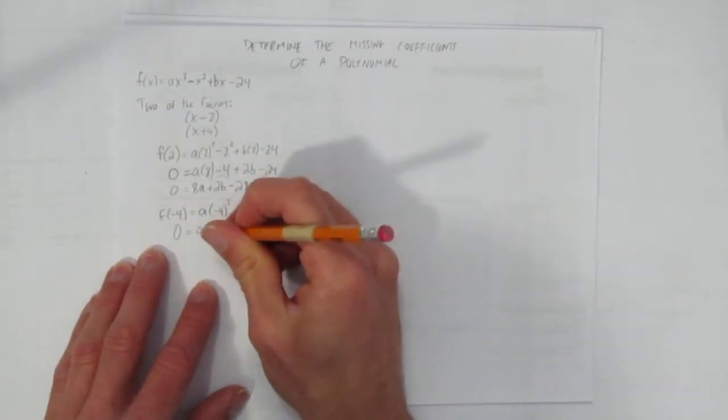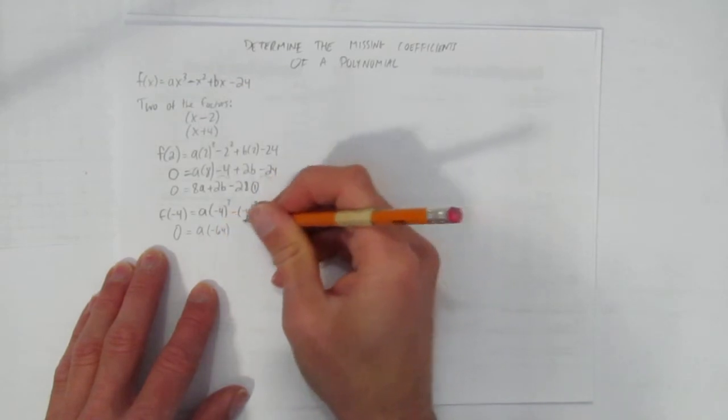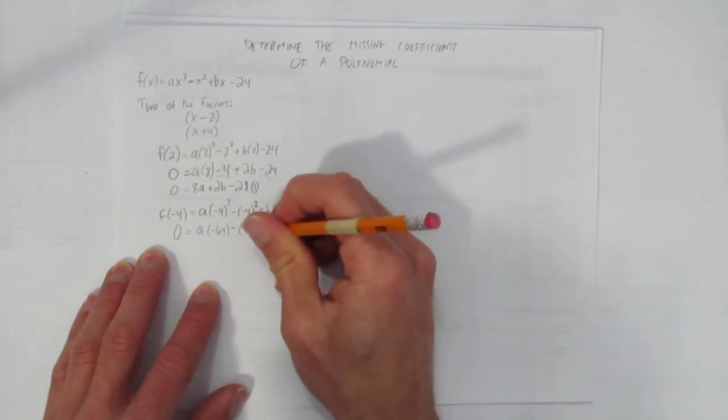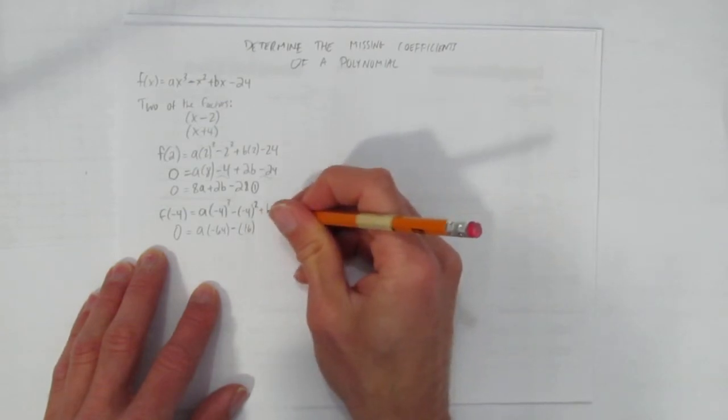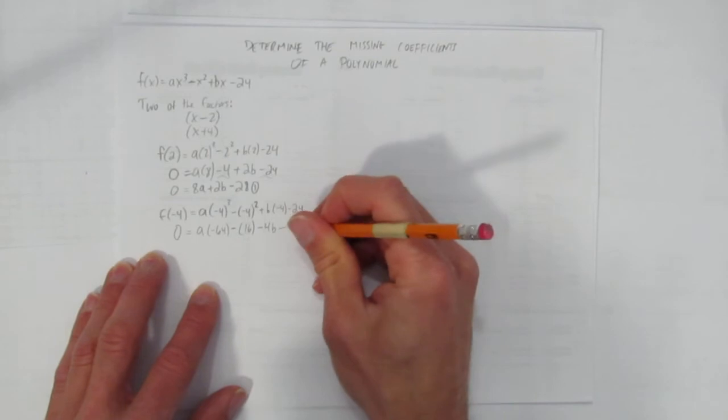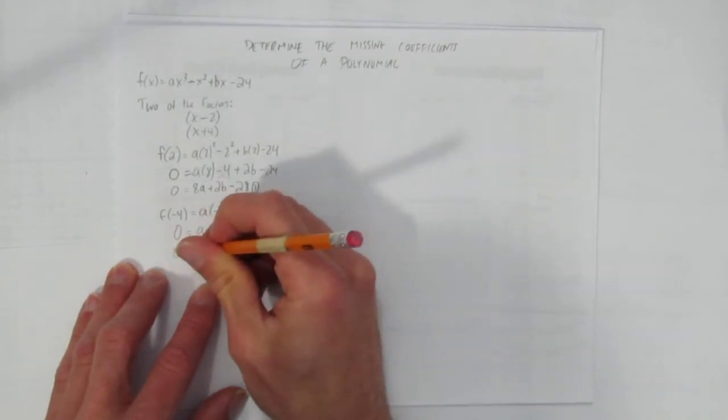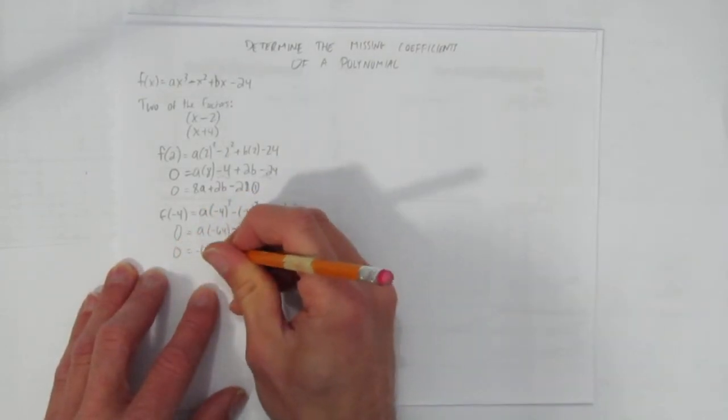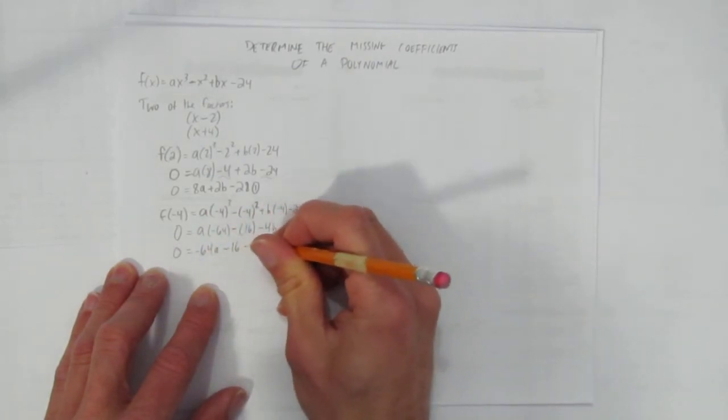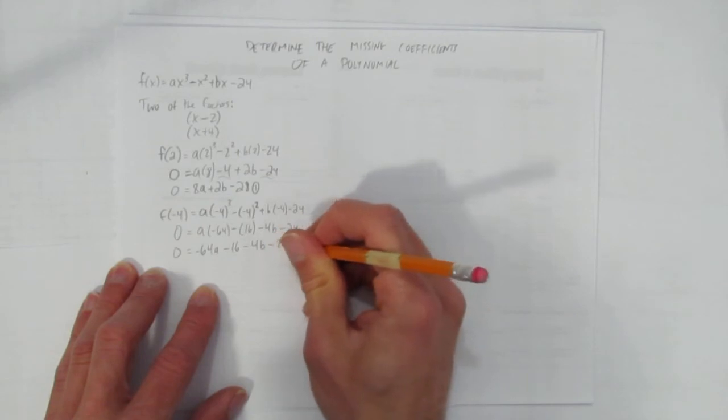Let's simplify. You get a times negative 64 minus negative 4 squared, that's positive 16, plus b times negative 4, that's negative 4b minus 24. So I'll take an extra step here because I don't want to mess up the minuses. I get negative 64a minus 16 minus 4b minus 24.